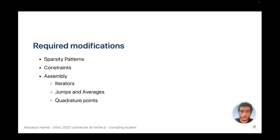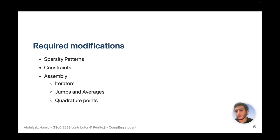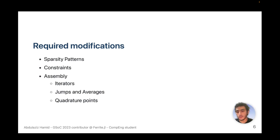The required modifications are: modifying the sparsity patterns to allow for cross-element coupling as a function of the grid topology; applying Dirichlet boundary conditions strongly using discontinuous interpolations which have nodes on the boundary; using an interface iterator to iterate over all the interfaces of the grid; evaluating jumps and averages; and syncing the quadrature points to have the same spatial coordinates.